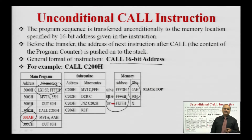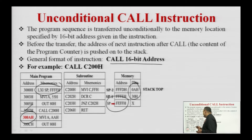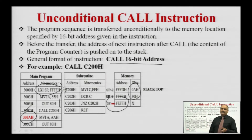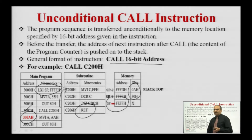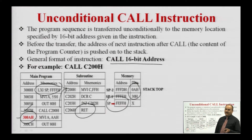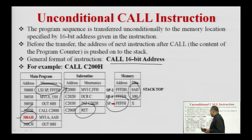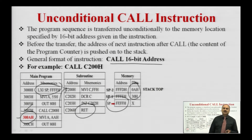When the microprocessor executes the CALL instruction, it transfers control from memory location 3007H to the subroutine at memory location C200H — this is the delay subroutine. This subroutine generates a certain amount of delay. The last instruction of any subroutine is the RET instruction. When the microprocessor executes the RET instruction, it returns from the subroutine to the main program at address 300AH. The returning address is stored in the stack, and when the microprocessor executes RET, it picks the returning address from the stack and returns back into the main program unconditionally.